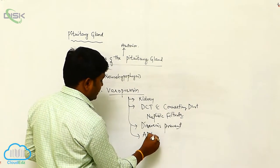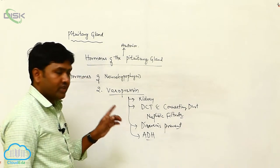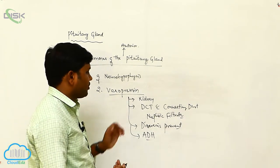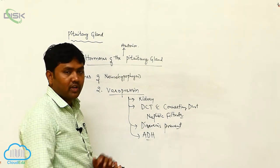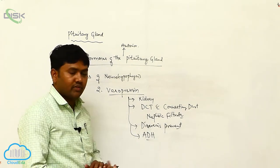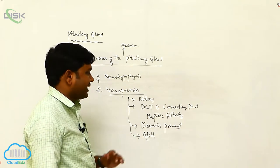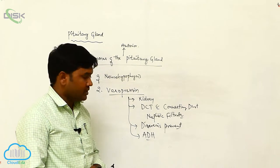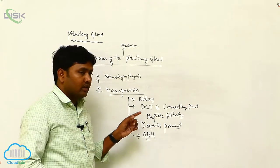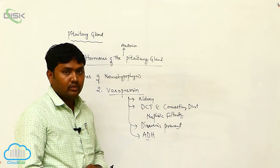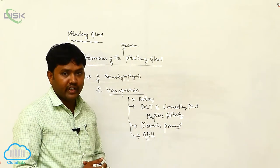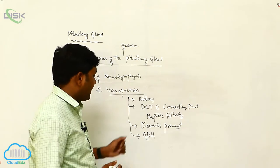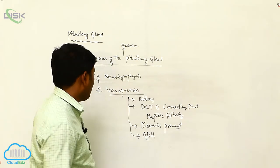Because diuresis is prevented, vasopressin is called the anti-diuretic hormone, or ADH. Vasopressin works on the kidney, controlling reabsorption of water from the distal convoluted tubule and connecting duct via the nephric filtrate, so the urine becomes more concentrated and diuresis is prevented.